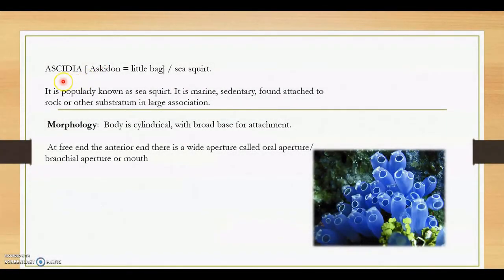What is the example? There is only one example, that is Ascidia. Ascidian means what? A little bag. You can see this is a colony of Ascidia, just like a bag. It is also known as sea squirt. It is popularly known as sea squirt. It is marine, sedentary, found attached to rock or other substratum in large associations.